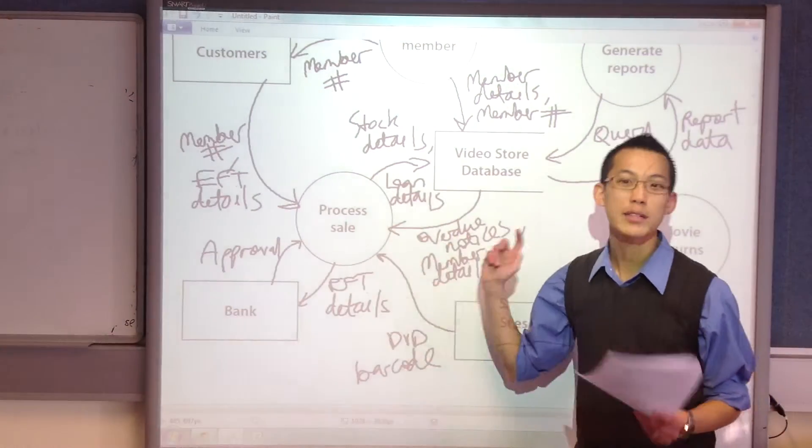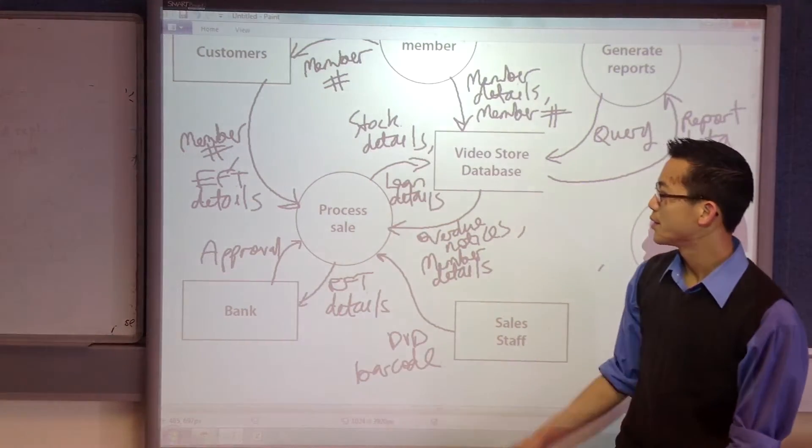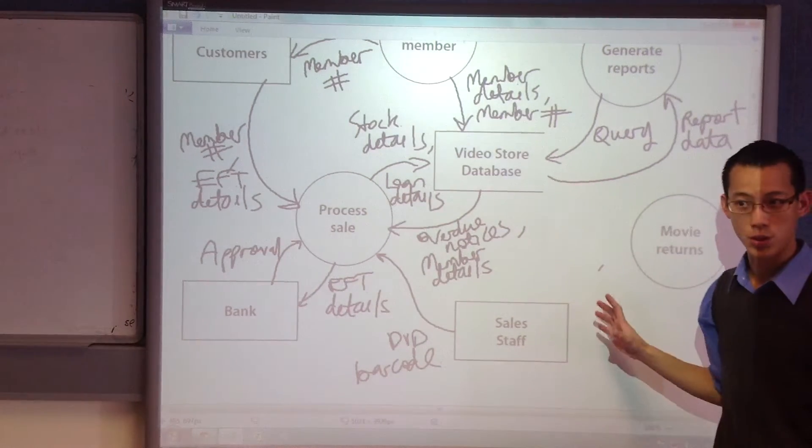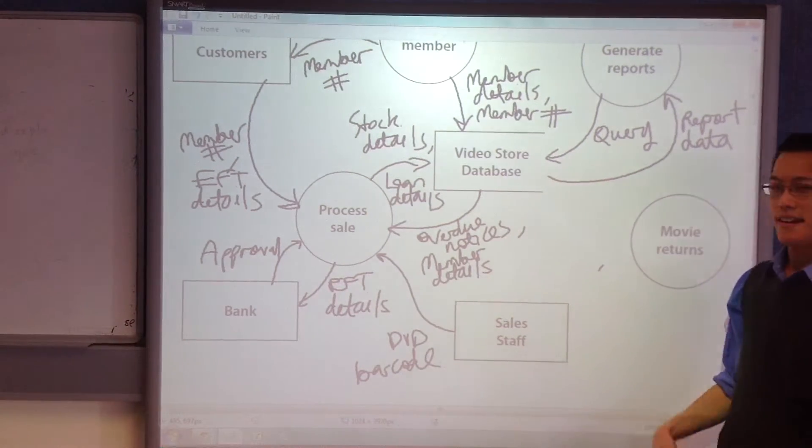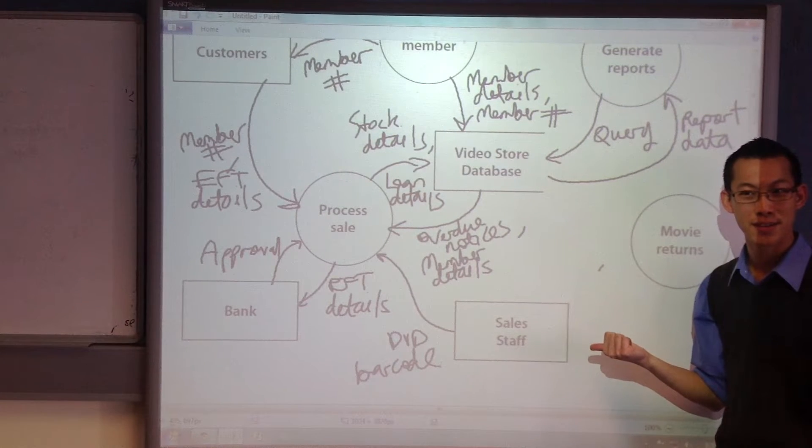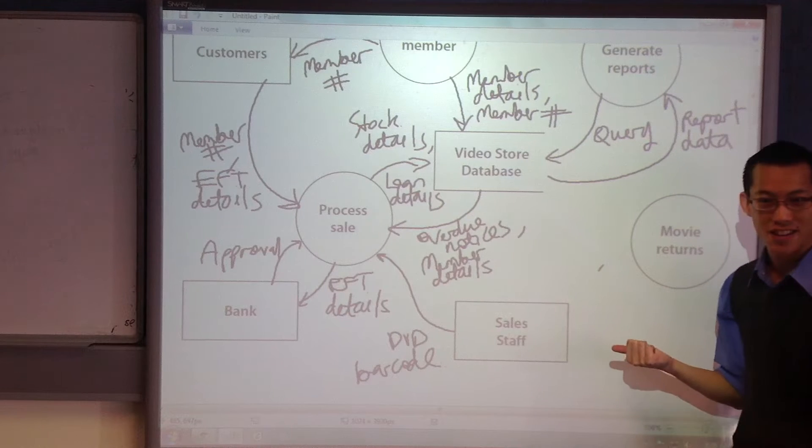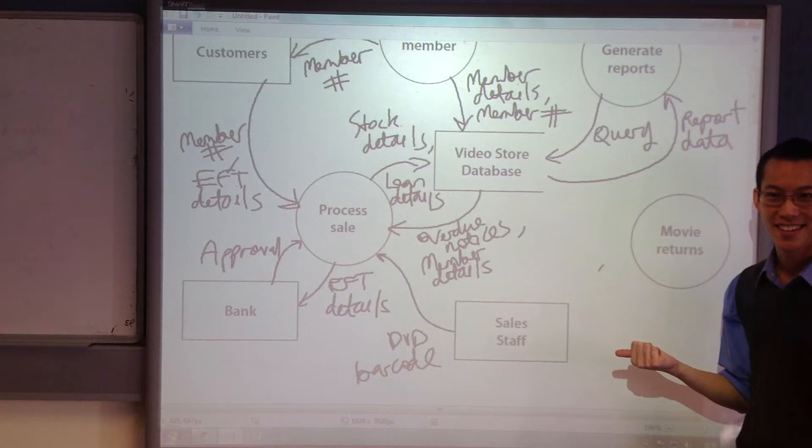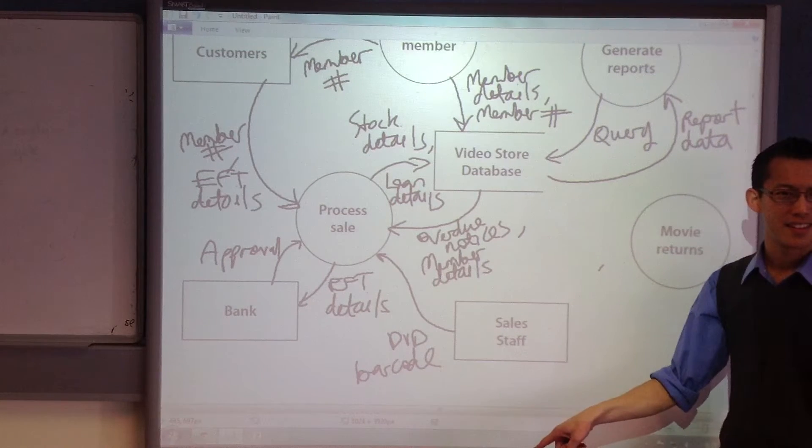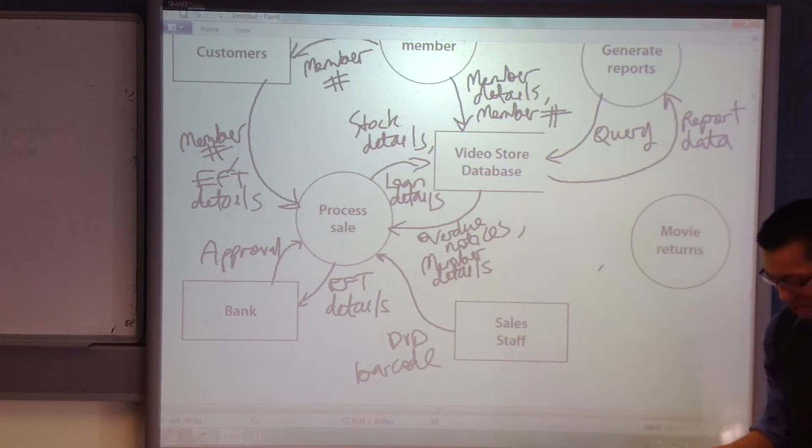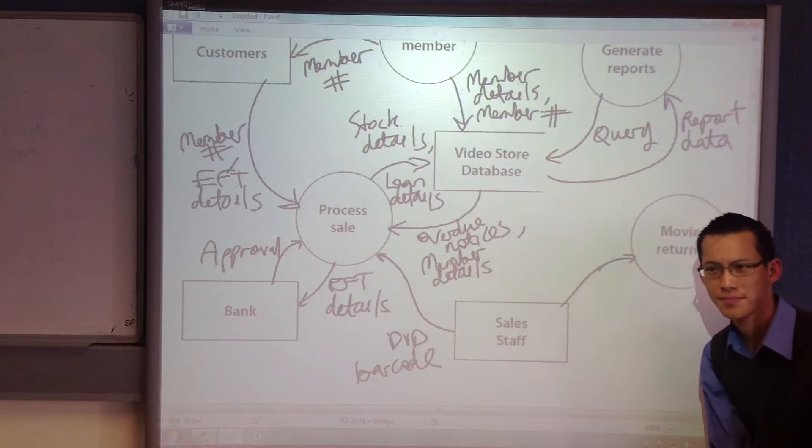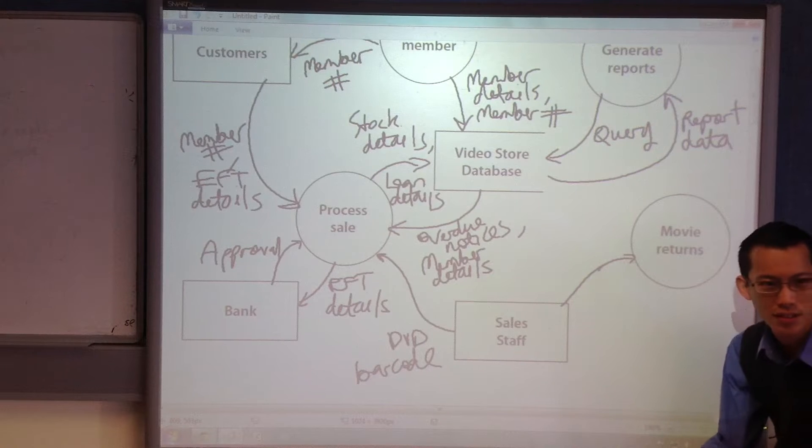Now, process sale. That was a pretty complicated process, right? There was a lot of data flowing in and out from a lot of different groups of people and a lot of different sources and destinations, okay? Now, we're on to our last one over here. Process returns. Do you reckon you could do it without me helping you? Where are arrows going to go? What do you think? Sales staff. To or from? To. Why? And what? What stuff will be provided?